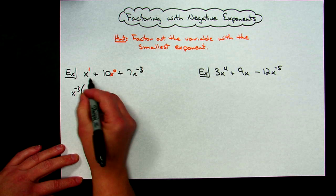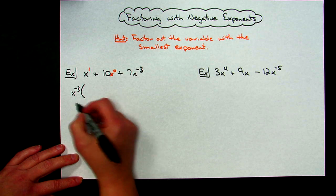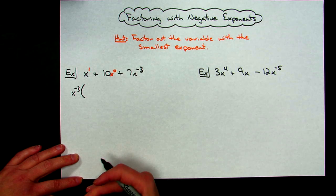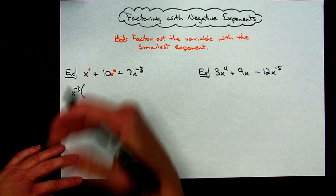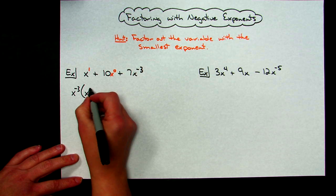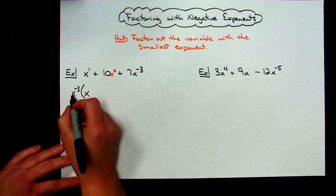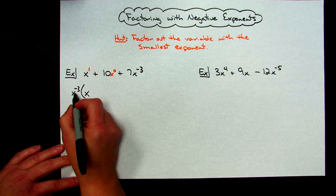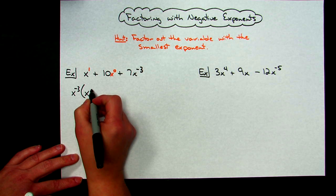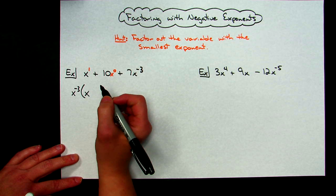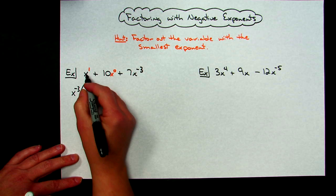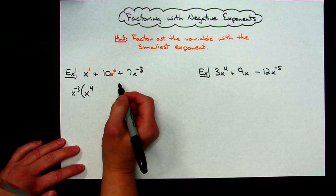Now here, if you think okay well I've got to distribute this back out to get the answer that I started with, that's what I'm doing. If you factor something, then you can take that answer and multiply it back to get that original answer. So I've got to come up with x raised to some power. When multiplying like bases we add the exponents, so -3 plus what number will give me 1? It's going to be 4.